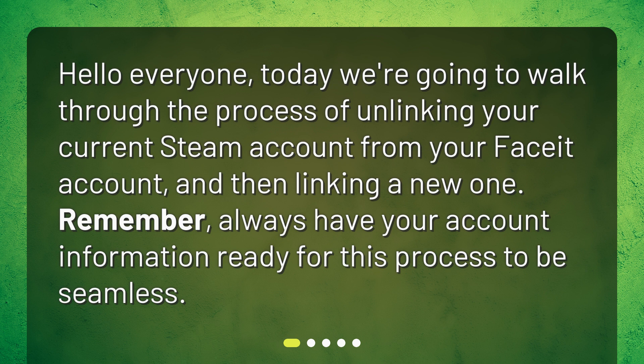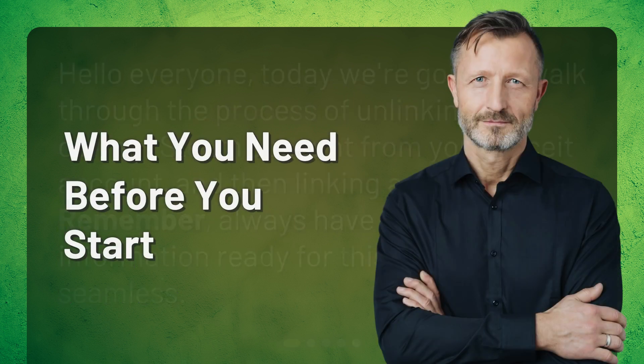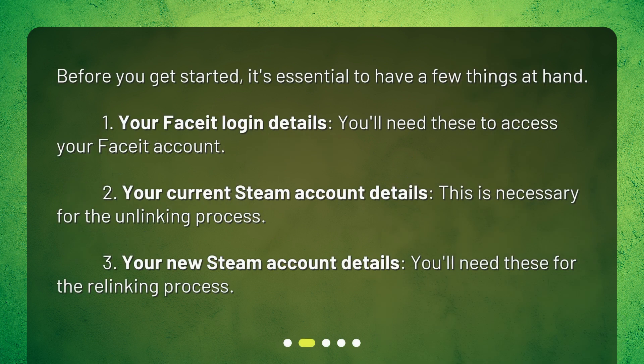What you need before you start: before you get started, it's essential to have a few things at hand. One: your FACEIT login details — you'll need these to access your FACEIT account. Two: your current Steam account details — this is necessary for the unlinking process. Three: your new Steam account details — you'll need these for the relinking process.